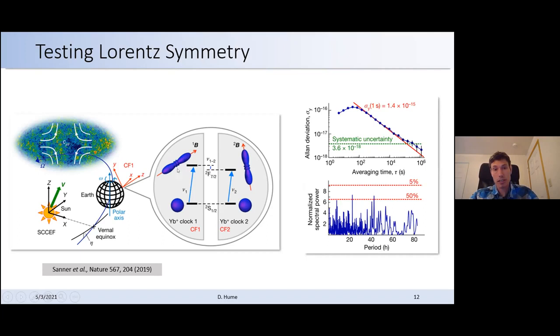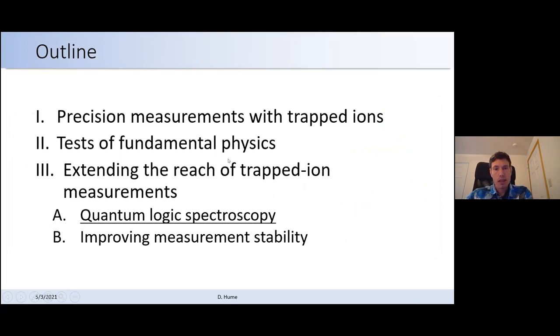I think that the ytterbium system is particularly interesting for this because it has this highly anisotropic excited state. Okay, so that gives some flavor of the kind of measurements that we're interested in making, and I want to talk about extending the reach of these trapped ion measurements. And a really key tool in this is quantum logic spectroscopy, which has been the engine behind the aluminum ion clock and is now getting applied to other systems. So just real briefly how that works.